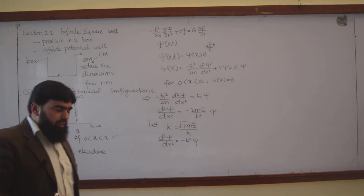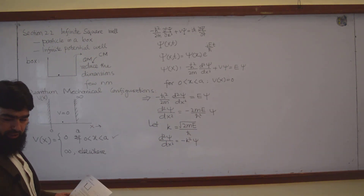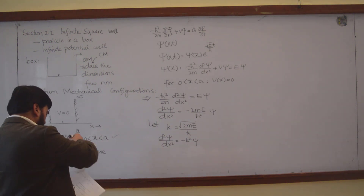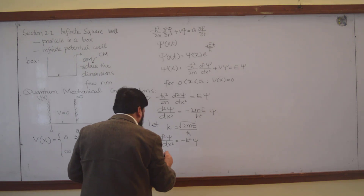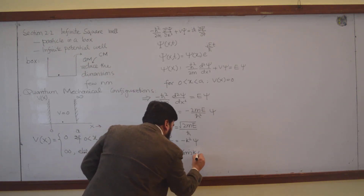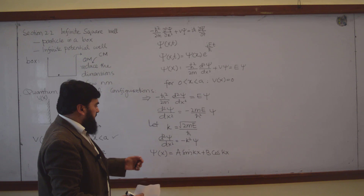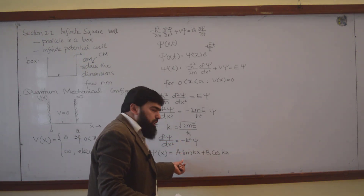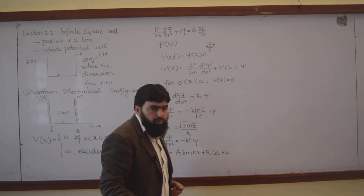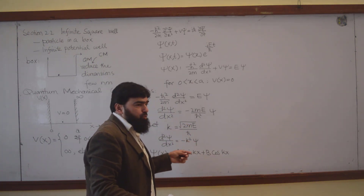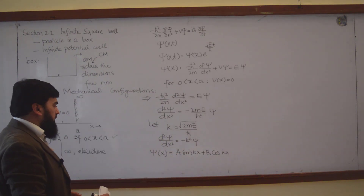The general solution of this equation is psi(x) = A sin(kx) + B cos(kx). Equivalently, the solution can be written as psi(x) = A e^(ikx) + B e^(-ikx). Since e^(ikx) can be expressed in terms of cos(kx) and sin(kx), both forms are the same solution.